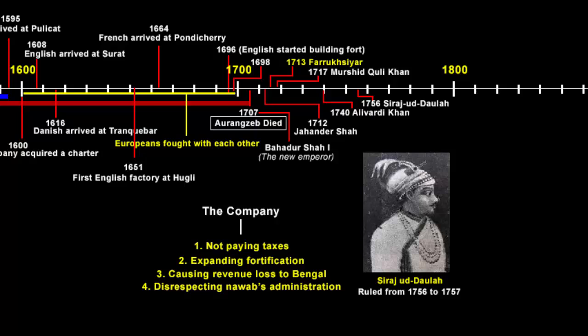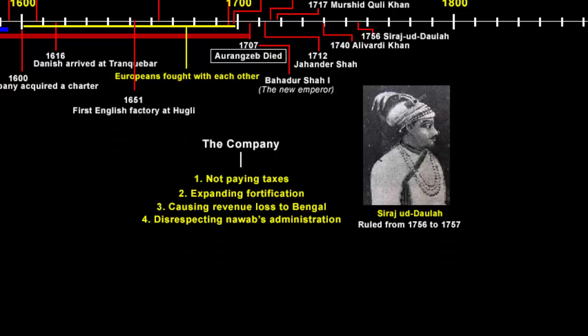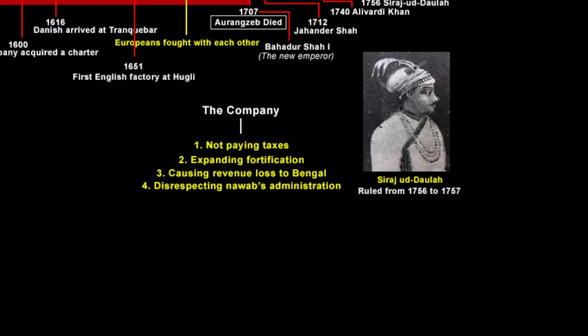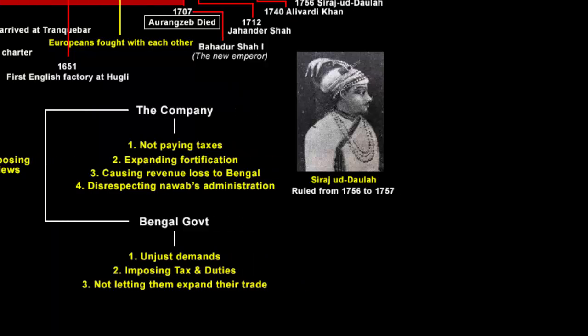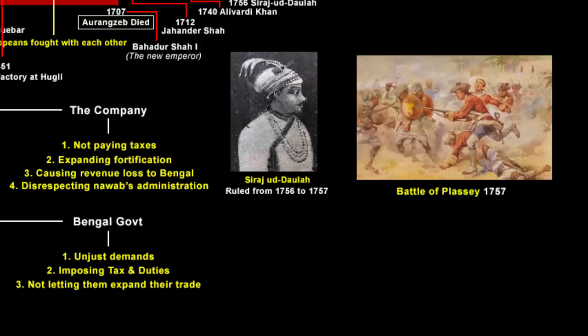We've heard the Nawabs' side of the story, and every story has two sides. The company's justification was that the unjust demands of the Bengal government were ruining their trade, and that trade could flourish only if duties were removed. They also said that to expand trade, the company had to enlarge its settlements and rebuild its forts. Both the Nawab and the company had clearly contradicting views, and this finally led to the famous Battle of Plassey. We will get back in the next video and learn more about the Battle of Plassey.